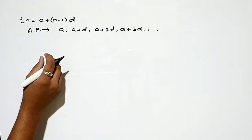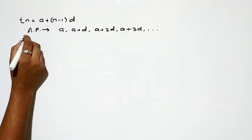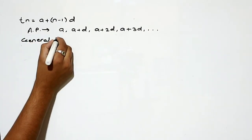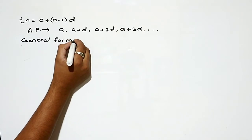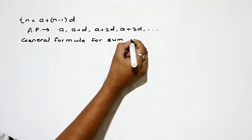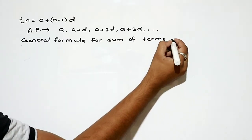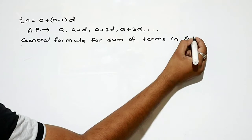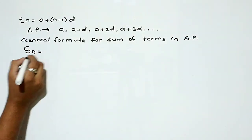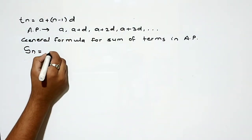We will calculate the general formula for the sum of n terms in an arithmetic progression. The sum Sn is the addition of all these terms in the given AP: a + (a+d) + ...